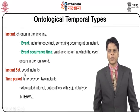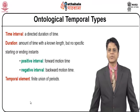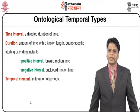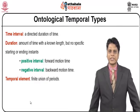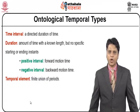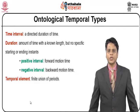Likewise, there will be an instant set, which includes a set of instances, and we have a time period which gives time between two different instances, also called an interval — but there will be a conflict with the SQL data type interval. Time intervals are defined as part of ontological temporal types and represent a directed duration of time. Duration is completely different from a time interval — duration represents the amount of time with a known length but no specific starting and ending instances. There will be a positive interval and a negative interval: forward motion time will be a positive interval, whereas anything referring to the previous time — backward motion — would be a negative interval. Finally, we have a temporal element, which is a finite union of periods.